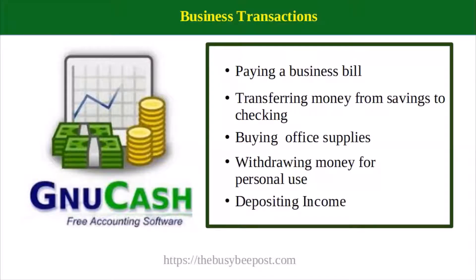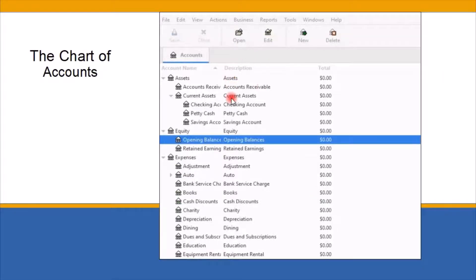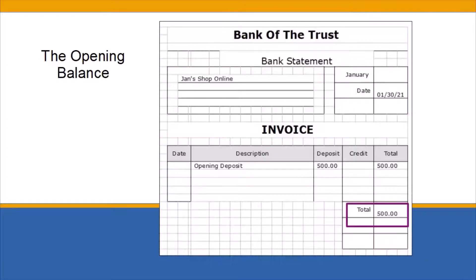The chart of accounts represents the different types of business expenses and income you can expect to encounter in the course of your business. When you first start using GNU Cash, one of the first transactions you should enter is the opening balance. You only have to enter this transaction one time. The opening balance should reflect the ending balance of your last business checking account statement, or the newly deposited amount if you recently opened a new business checking account.